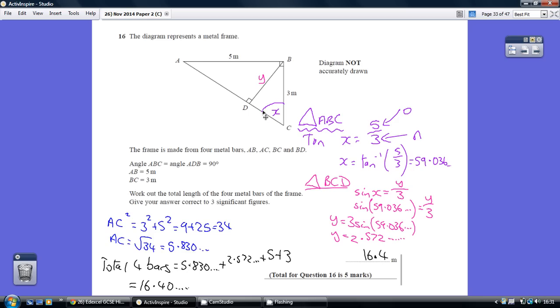let's work out this angle here, again using the triangle ABC. Picturing ourselves at this angle, that side is opposite, that side is adjacent, so it's tan.